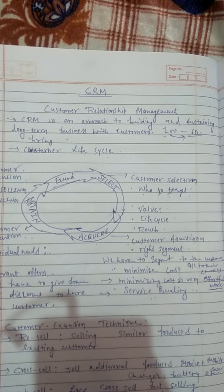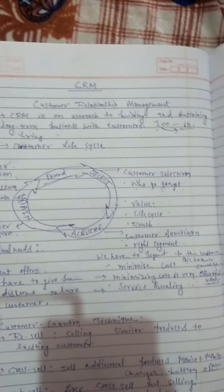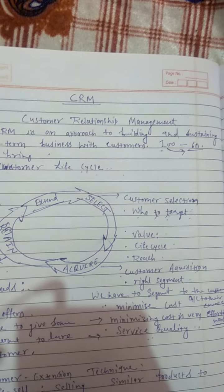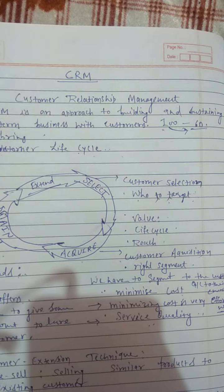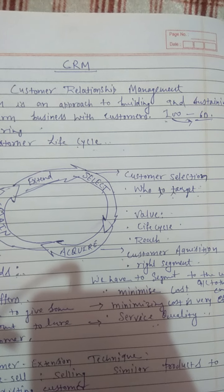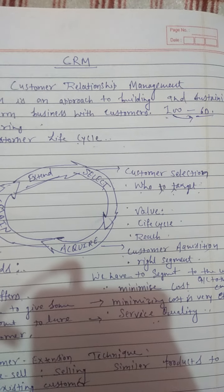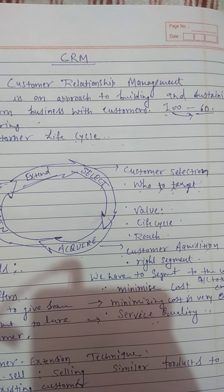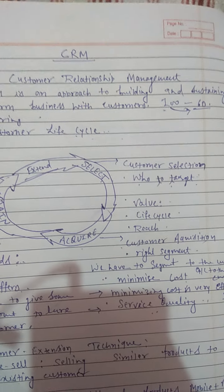We will see the life cycle of the customer. There are four steps in the life cycle of a customer. The first is Select — selection of customer means which type of customer you target, because selection of the customer is very important based on the type of service your business provides.